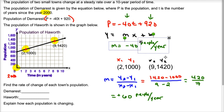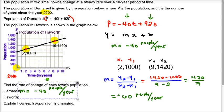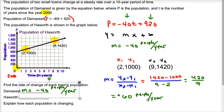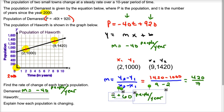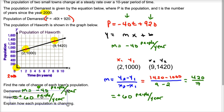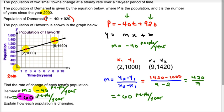So here are our answers: the population of Demarest is decreasing at 40 people per year, since the slope is negative. The population of Harworth is increasing at a rate of 60 people per year. Make sure you answer all the questions they're asking: rate of change of Demarest, rate of change of Harworth, and explain the difference in each one.